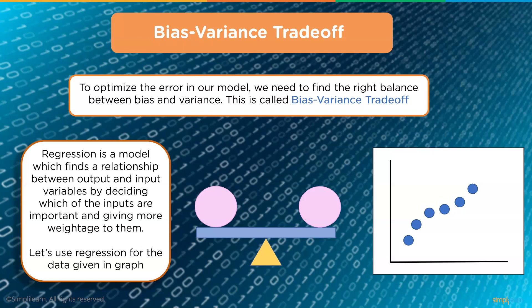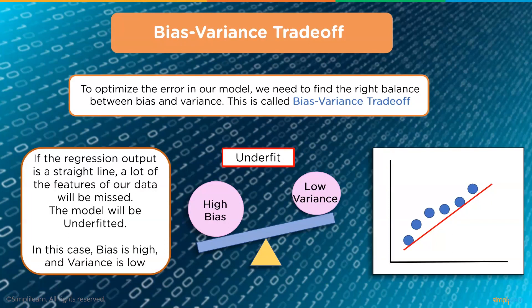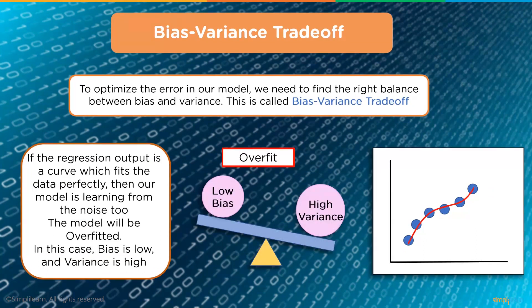Regression finds a relationship between output and input variables by giving more weight to important inputs. If the regression output is a straight line, a lot of features of our data will be missed — the model will be underfitted, with high bias and low variance. If the output is a curve that fits the data perfectly, the model learns from noise too — it will be overfitted, with low bias and high variance. You can see the overfit curve goes directly through all the points with no averaging or generalization.